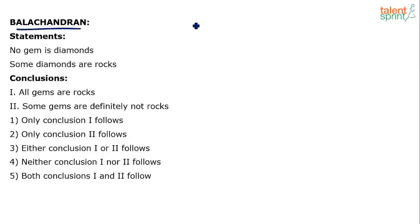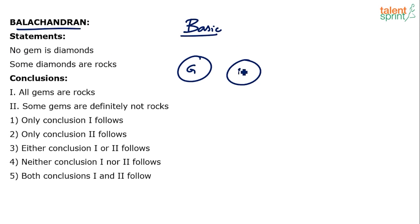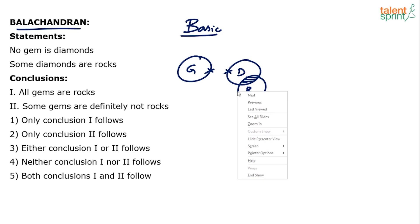Statement number one: draw the basic diagram for the given statements. No gem is a diamond — gem and diamond will not touch each other, these two are not going to overlap with each other. And then the next statement says some diamonds are rocks, so there is some overlapping between diamonds and rocks. No gem is a diamond — these two do not touch each other. And then some of the diamonds are rocks.